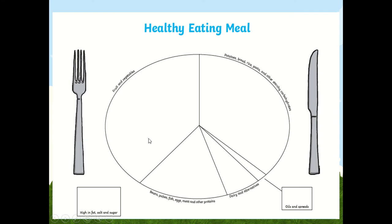Back to the plate — after all that, don't worry, there was a lot of information. What I'd like you to do is just think of a meal and see if you can make it balanced. Put each part of the meal into the correct section. For example, I went through the spaghetti bolognese — I'd put the tomatoes, mushrooms, and onions in the sauce. If you're not sure what's in the meal you're planning, ask a grown-up to help you out. I'd have the mince here and the spaghetti pasta in the carbohydrates section.